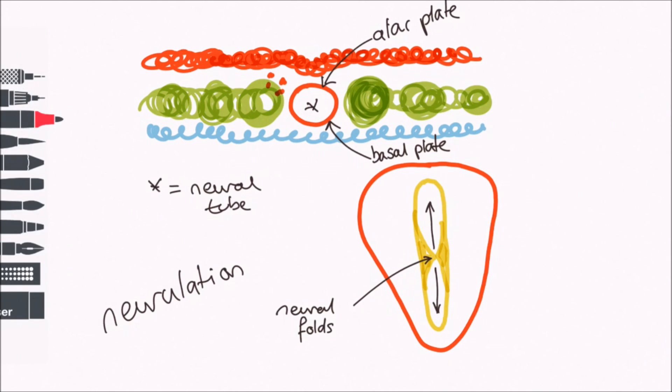During neurulation, some cells break off from the dorsal aspect of the neural tube. These are called neural crest cells and form the sensory neurons of the dorsal root ganglia. Neural crest cells extend axons both centrally and peripherally, explaining why we find pseudounipolar neurons in the dorsal ganglia. On the other hand, motor axons just extend from neurons in the alar plate.